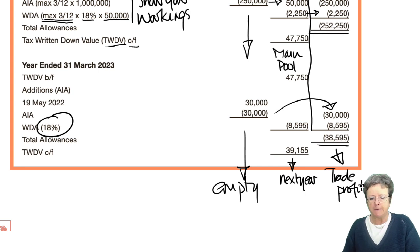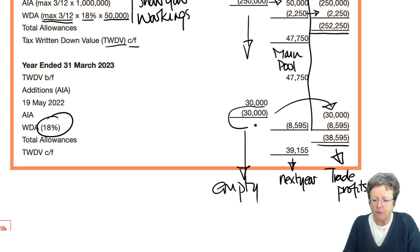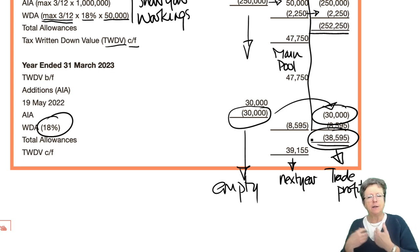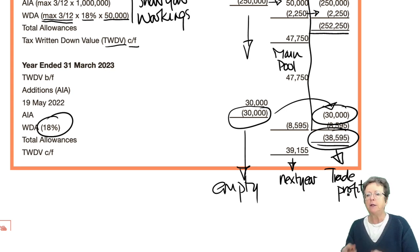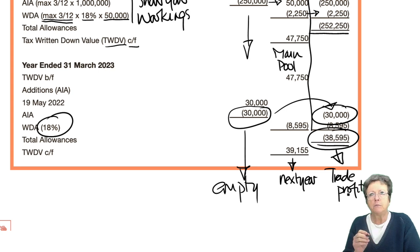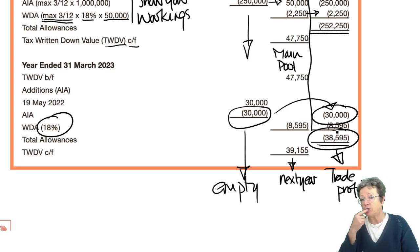Just one thing to bear in mind — I keep brackets around the total column figures because that figure has to be deducted from the trade profits. You'll notice that BPP in particular doesn't put brackets on the end column, and I don't know why. But I prefer to keep brackets on that end column because in an exam situation, if it's got brackets and you're copying it, you will deduct it from your adjusted profits. It's entirely up to you — I just think it makes more sense that way.